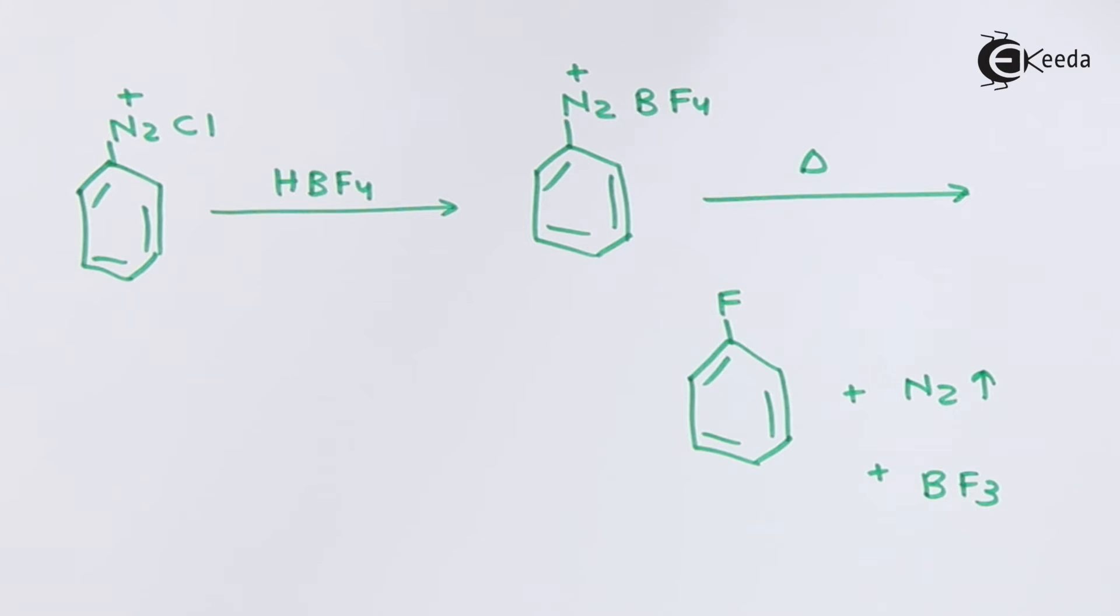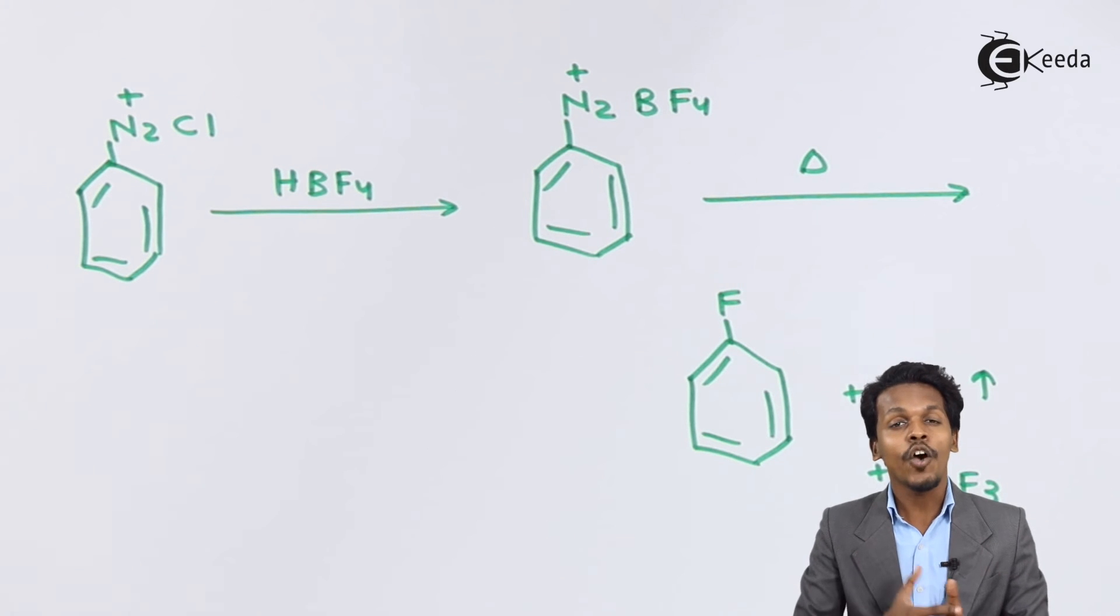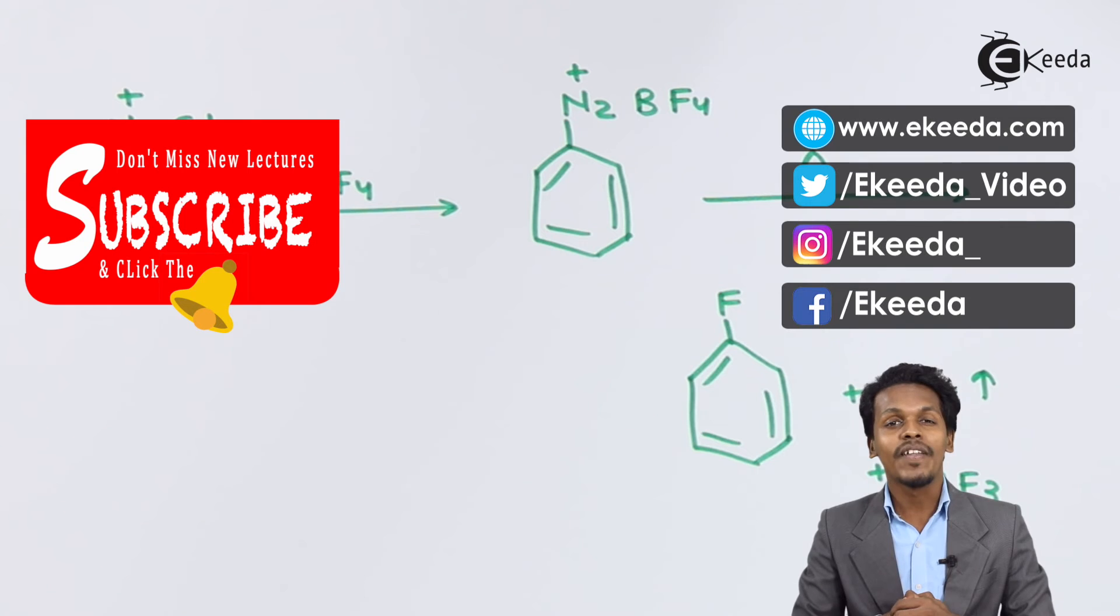This is the only method where we can prepare aryl fluoride, that is Balz-Schiemann reaction from diazonium chloride. Thank you, friends, for watching this video. I hope you have understood how we can prepare aryl fluoride from Balz-Schiemann reaction. I hope I will see you next time. Till then, don't forget to subscribe. Thank you so much.